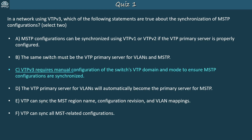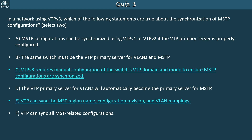The first correct answer is C: VTP V3 requires manual configuration of the switch's VTP domain and mode to ensure MSTP configurations are synchronized — you need the switch in the same VTP domain and must manually configure the VTP mode for MST with 'VTP mode server MST.' The second correct answer is E: VTP can sync the MST region name, configuration revision, and VLAN mappings, but not all MST-related configurations such as a switch's priority. A is incorrect because only VTP V3 can sync MSTP. B is incorrect because different switches can be primary for VLANs and MSTP. D is incorrect because the VLAN primary server won't automatically become the MST primary server.